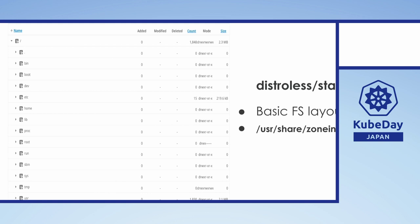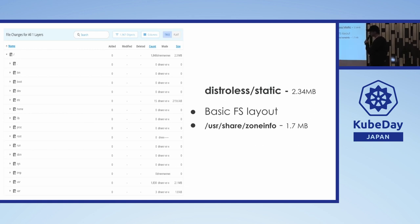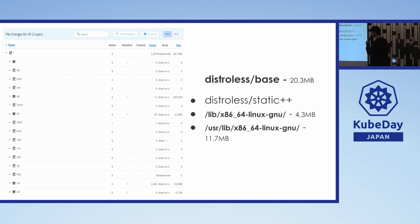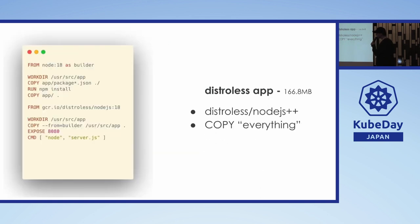Distroless is probably one of the most well-known ways to get a minimal image. There are several flavors starting with the most basic — 'static' — which gives you mostly a directory layout plus zone info. Then there's the 'base' image which includes the static version plus a few extra OS libraries. After that there are application-specific distroless versions, which are much bigger — they include base plus additional system libraries and the application runtime.